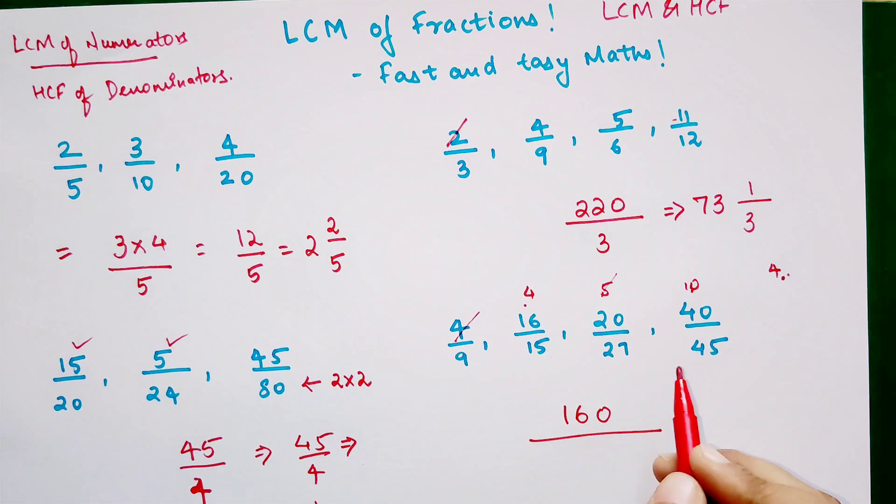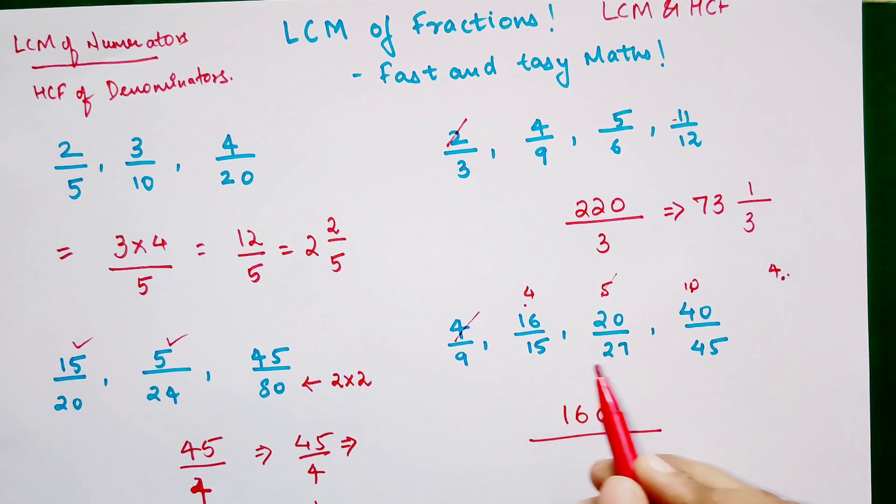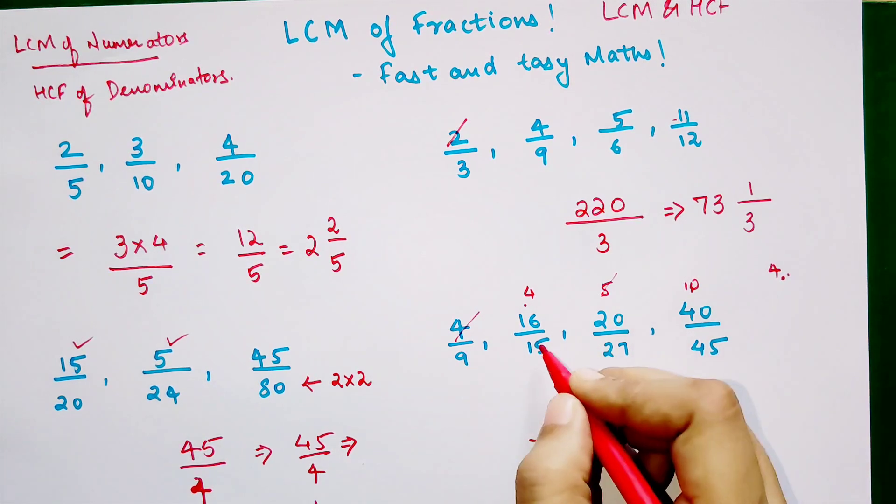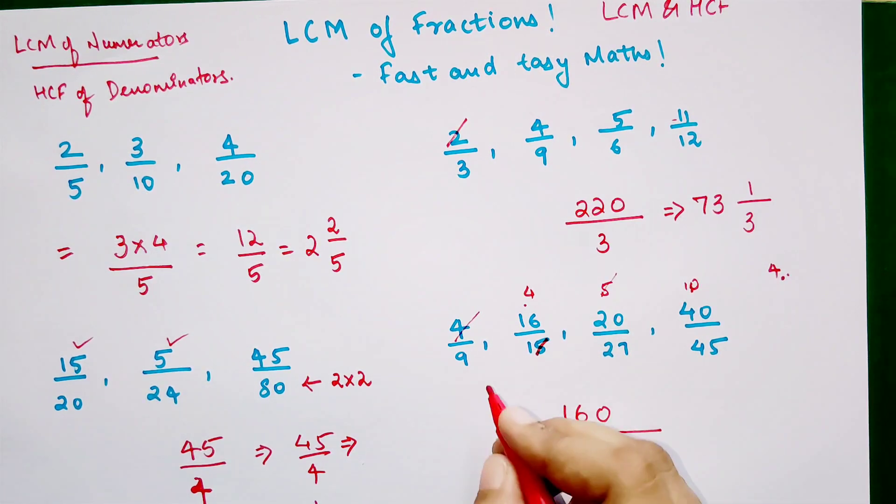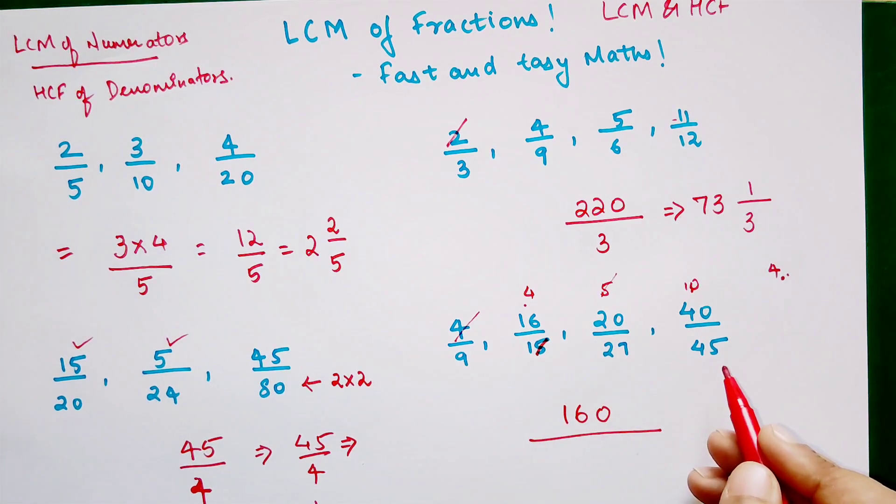Now over here, if you look closely, again 9, 15, 27, and 45. Oh sorry, this was 18, my bad. So if you look, all of them are getting divided by 9. So the highest common factor is 9.